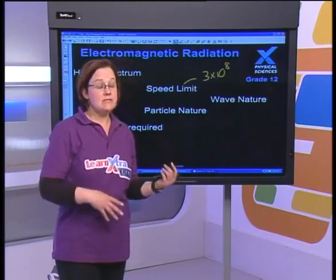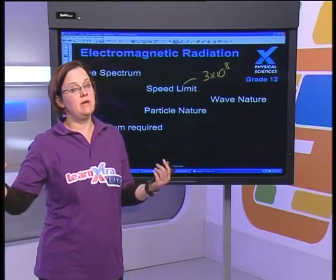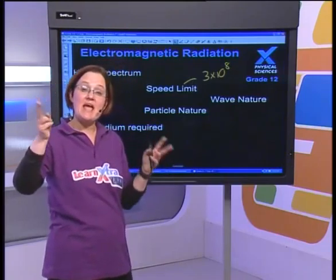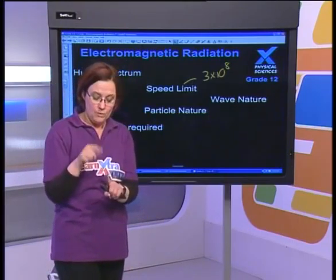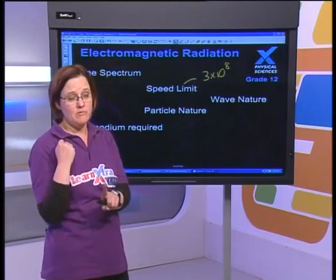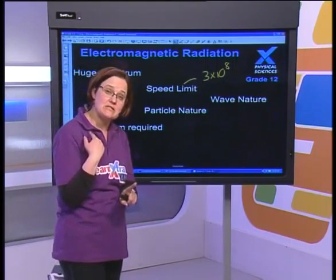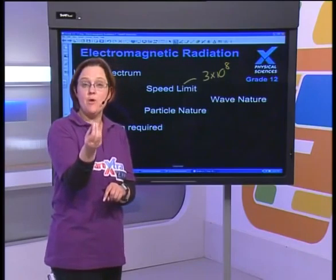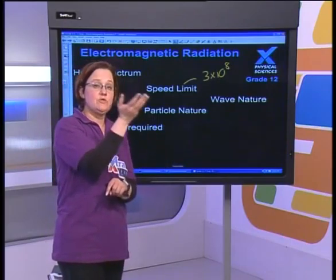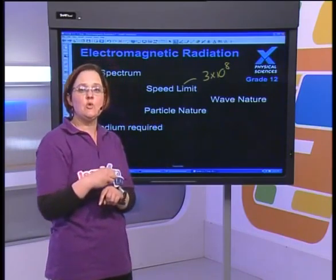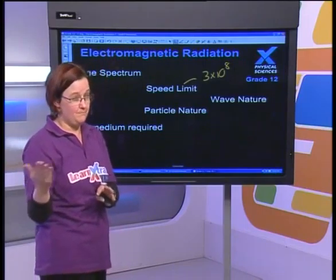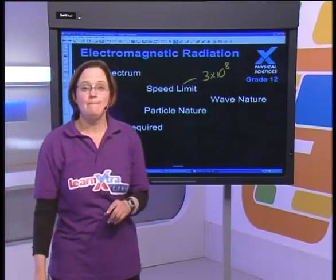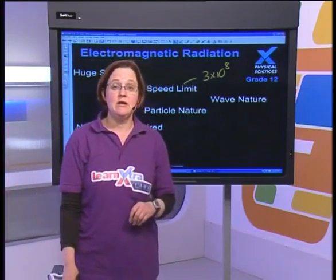The electromagnetic spectrum has both a wave nature and a particle nature. Some parts have a greater wave nature — like radio waves — and some have a more prominent particle nature — like gamma rays. We know they have a wave nature because they can be reflected, refracted, and diffracted. They also behave like particles, as we saw in the photoelectric effect, where they can kick electrons out of metals.